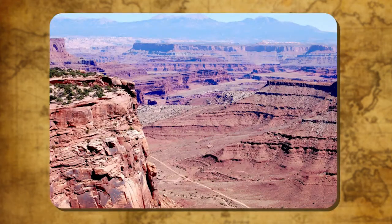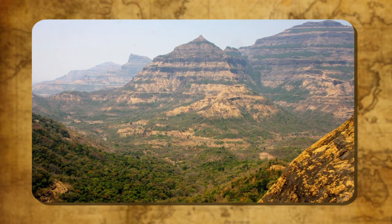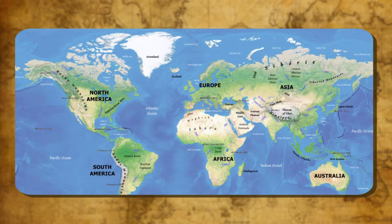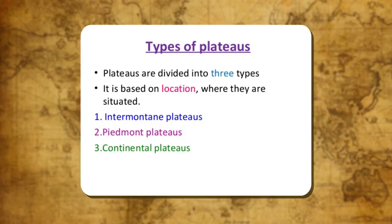Plateaus are highlands with a broad and more or less flat surface. They nearly always rise abruptly above the surrounding country on at least one side, which is why plateaus are also called table lands. They are generally higher than plains. Some plateaus are very large and extend over thousands of kilometers, like the Deccan Plateau in India. Almost every continent — Africa, Asia, Australia and South America — has plateaus. Plateaus can be classified as Intermontane Plateaus, Piedmont Plateaus, and Continental Plateaus.